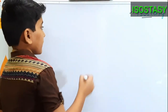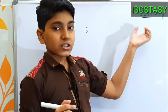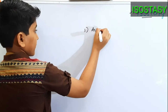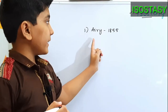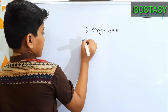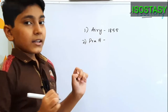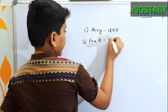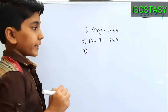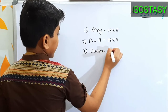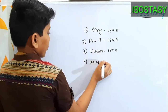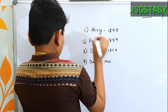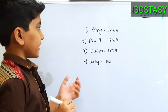Regarding isostasy, there are many people who have given their hypotheses. The first person was Airy, who gave his theory in 1855. The second person is Pratt, who published his theory in 1859. The third person was Dutton, who also gave his theory in 1859. Finally, the fourth was Daly, who published his theory in 1940. These are the four people who gave their theories regarding isostasy.